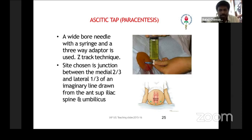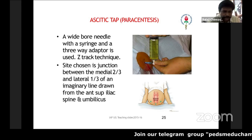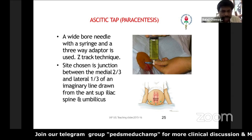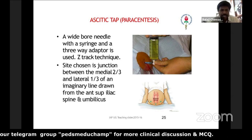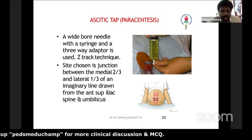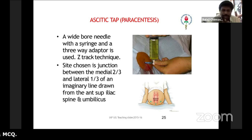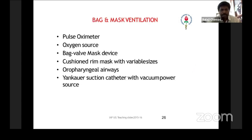Ascitic tap or paracentesis is also a similar push-pull technique using a three-way adapter and a syringe. Remember the landmark: it is the junction of the medial two-thirds and lateral one-third of an imaginary line drawn from the anterior superior iliac spine to the umbilicus. That is the place where you will be doing the ascitic fluid tap.